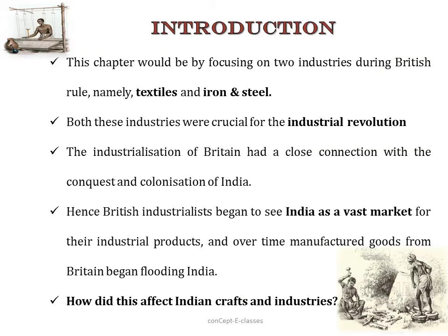In the previous chapters we saw how the Indian kings, the landlords, and the tribals were all affected by the East India Company and their policies. In this chapter we'll study about the crafts and industries of India during British rule, focusing on two main industries at that time — namely the textile and the iron and steel industry — and we'll see how it affected the weavers, iron smelters and the factory owners.